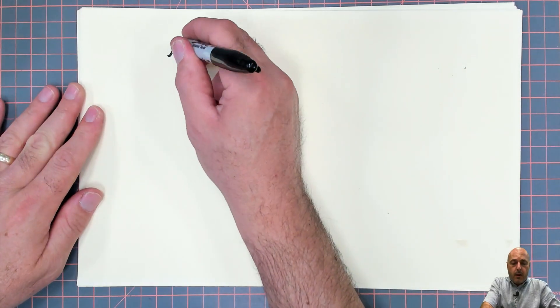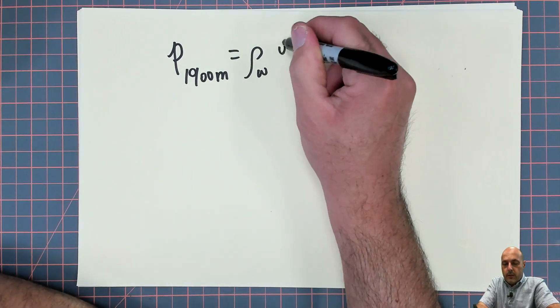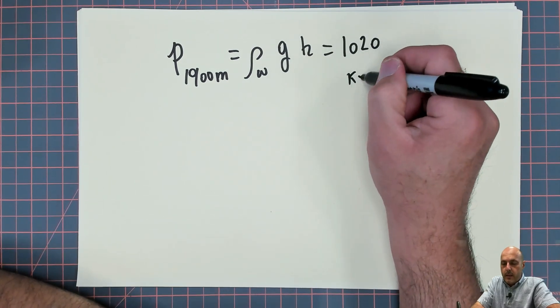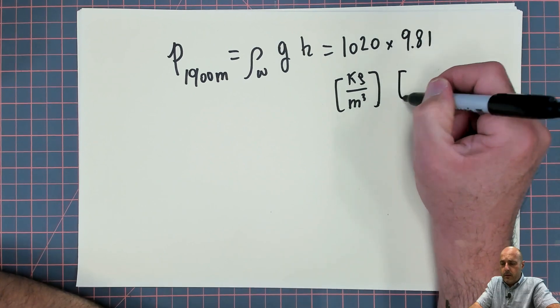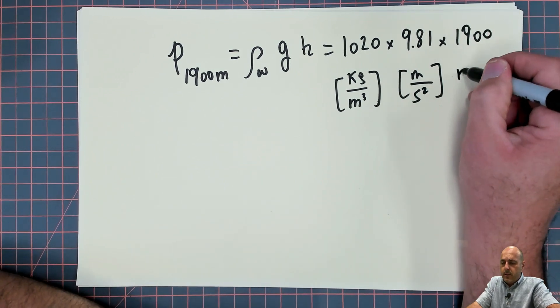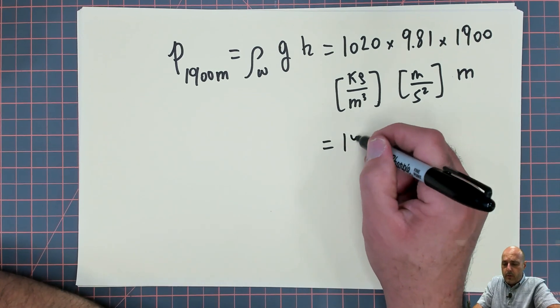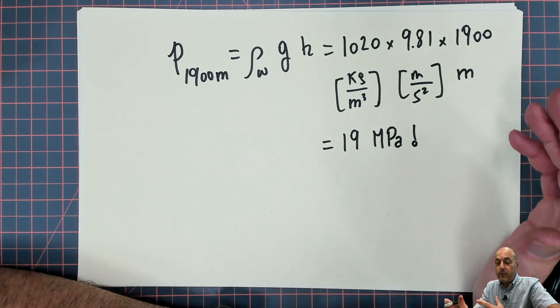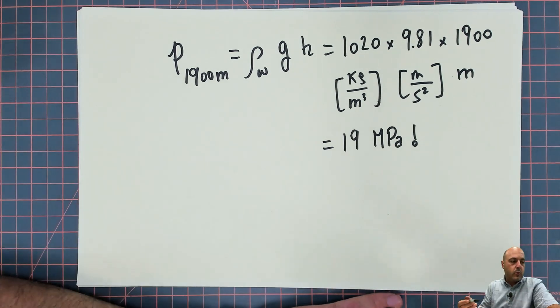Pressure at 1900 meters is equal to the density of water times gravitational acceleration times h. And at that depth we had 1020 kilograms per cubic meter, times 9.81, that's meters per second squared, times h, 1900 meters. So that is going to give us force per unit area. And it comes out to about 19 million pascals. That's about 187 atmospheres. That's pretty high, pretty high pressure. In any event you can plug this number back into our formula.